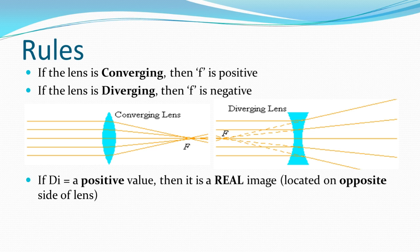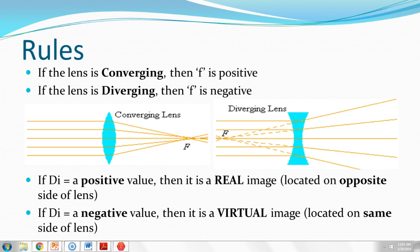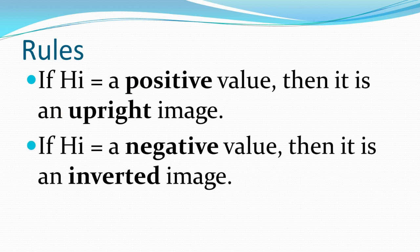If the distance of the image is a positive value, then it's a real image, located on the opposite side of the lens from the object. If the distance of the image is a negative value, then it's a virtual image, located on the same side of the lens as the object. If the height of the image is positive, it's an upright image. If the height is negative, it's inverted — upside down. Positive is upward; negative is downward.